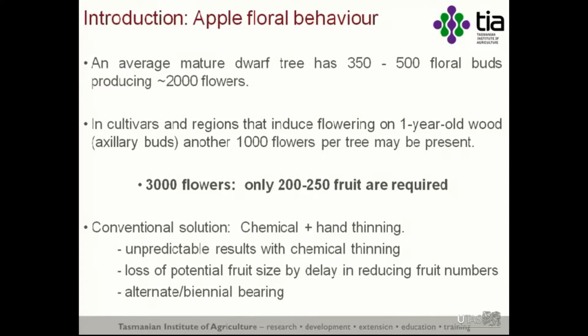We only require 250 or 200 fruit on each tree, so there's a big load on the tree relative to the number of fruit ultimately going to be harvested. The conventional solution to this is chemical and hand thinning. Chemical thinning starts at flowering and eventually ends up in hand thinning, which can be 2 to 3 months after flowering. If we consider that in short season varieties the whole season may only be 4 or 5 months, at least a third, possibly even half of the season has passed before the final crop loads are set.